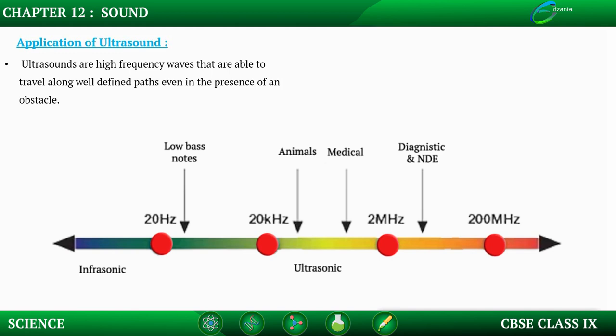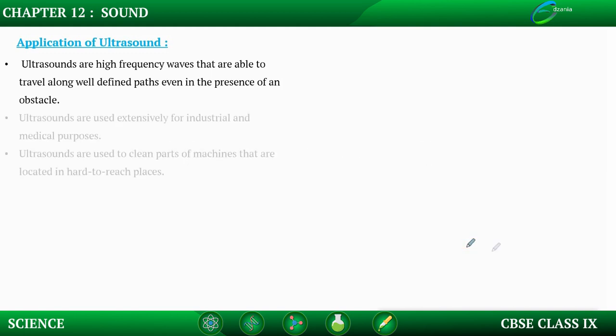Especially ultrasound, the frequency ranges which are above 20 kilohertz. Ultrasound will be very high frequency waves, and because of their high frequency, they travel along a well-defined path and they can penetrate through obstacles. This is the quality that is being used in many industrial and precisely in medical purposes.